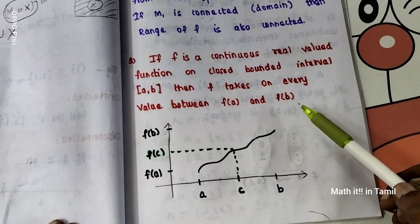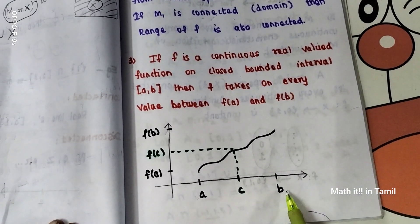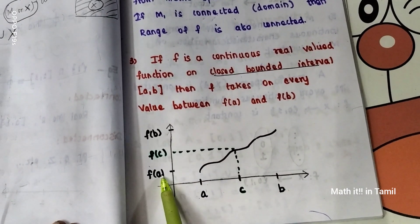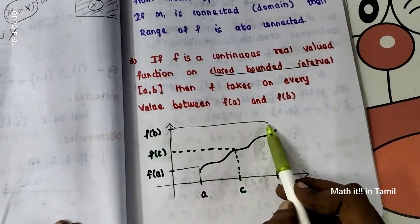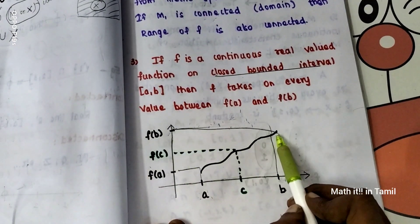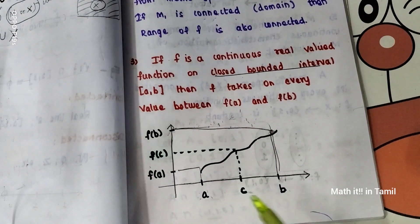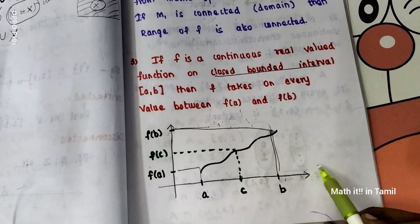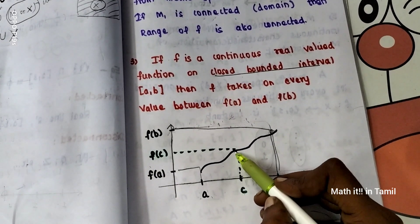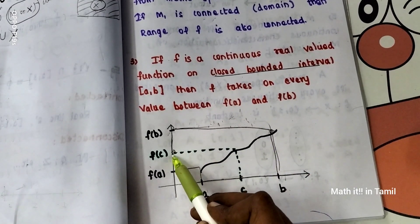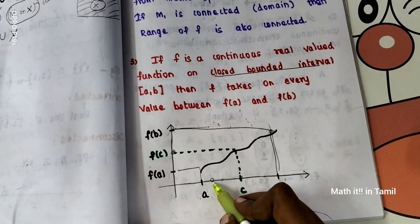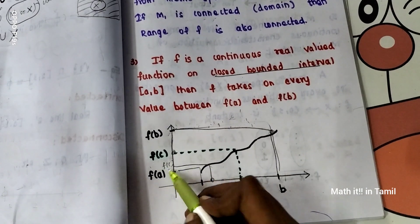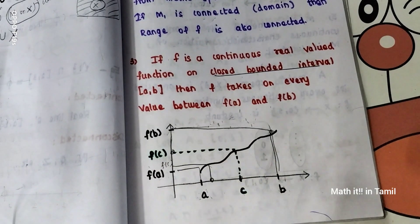So this is the Intermediate Value Theorem. Now, on the closed bounded interval [A, B]: A maps to F(A) and B maps to F(B). The Intermediate Value Theorem states that for any value between F(A) and F(B), there exists a point C in [A, B] such that F(C) equals that value — F(C) is between F(A) and F(B).